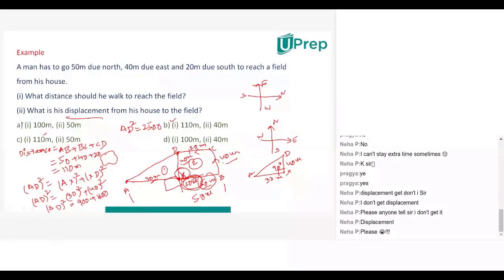In a right-angled triangle, we can apply the Pythagoras theorem. If any one of the angles is 90 degrees, it will be called a right-angled triangle. In a right-angled triangle, we can apply the Pythagoras theorem — which is named after a scientist called Pythagoras.